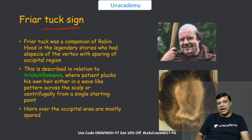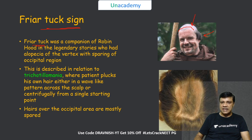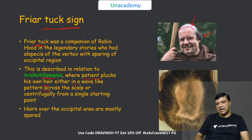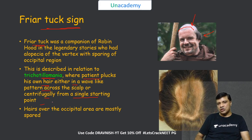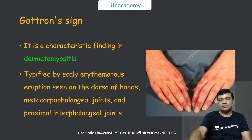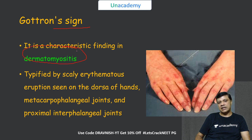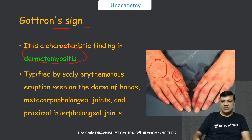The friar tuck sign is named after Friar Tuck, companion of Robin Hood, who had alopecia sparing the occipital hair. It is seen in trichotillomania, where the patient plucks their own hair either in a wave-like pattern across the scalp or centrifugally from a single starting point, with sparing of the occipital hair. The Gottron sign is a feature of dermatomyositis, characterized by scaly erythematous eruption over the dorsum of the hand, metacarpophalangeal and interphalangeal joints; it is a photosensitive rash.